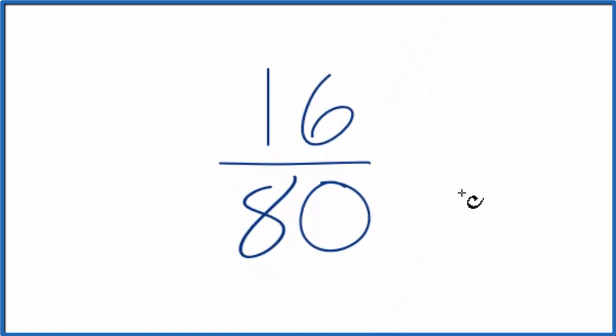There's a few ways you could do this. If you knew that 16 went into 80 evenly, you could just divide the top, the numerator, by 16.